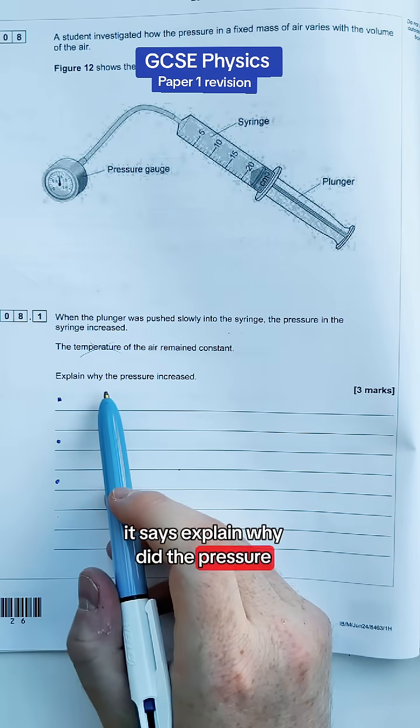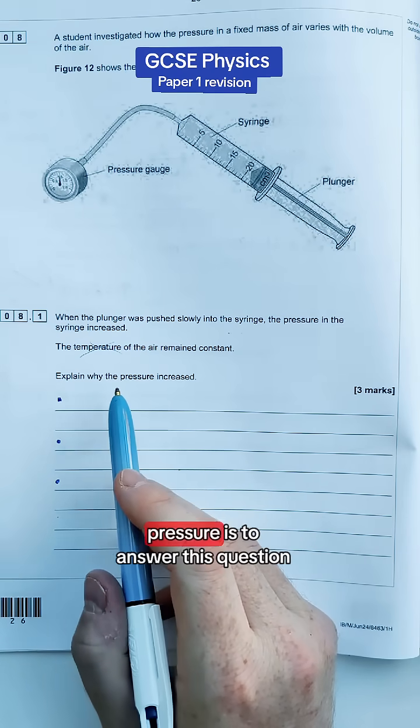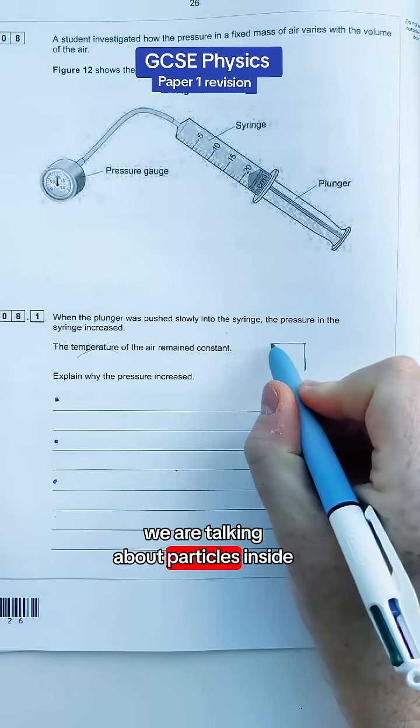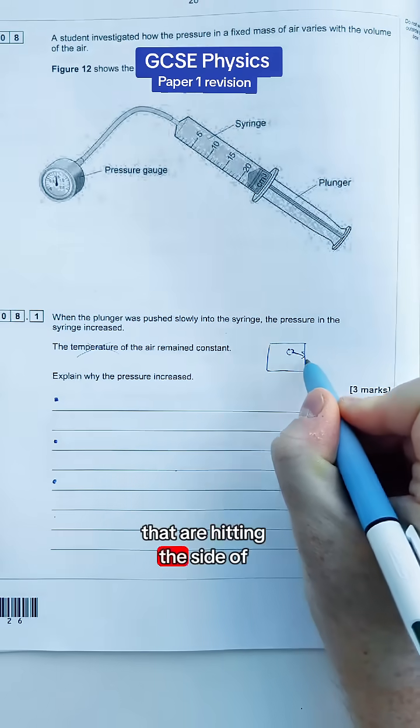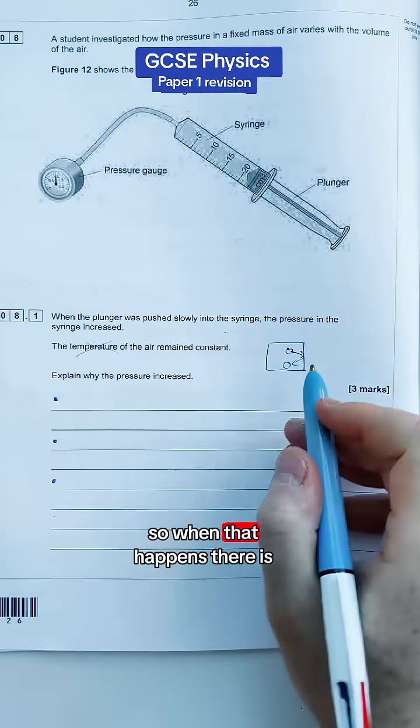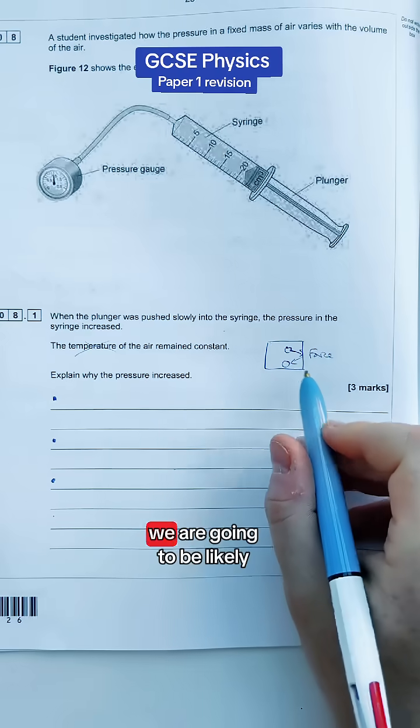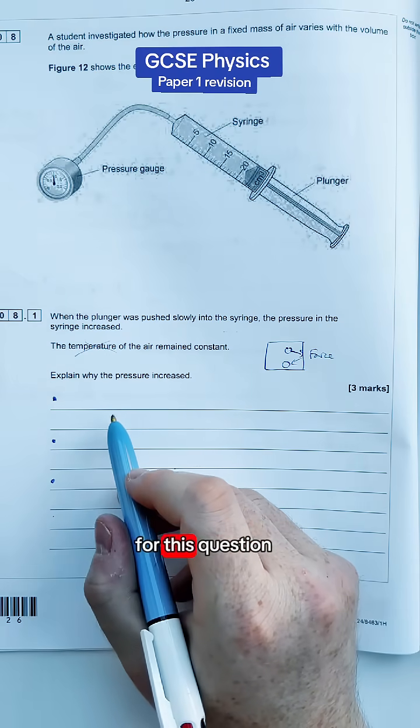So let's explain why the pressure increased. We need to know what gas pressure is to answer this question. When we talk about gas pressure we are talking about particles inside a gas that are hitting the side of the container and bouncing off. So when that happens there is a force exerted and if we can talk about force and collisions we are going to be likely to get close to three marks for this question.